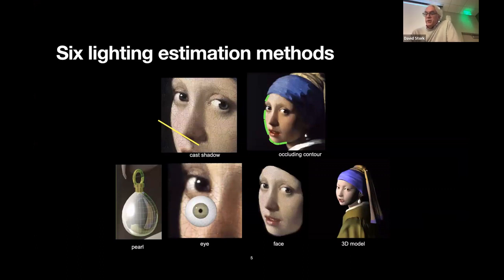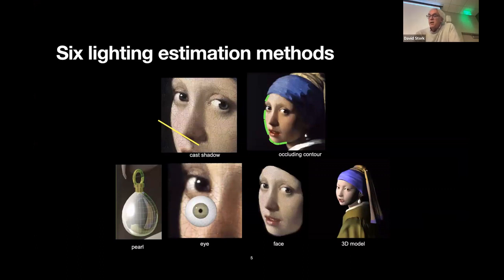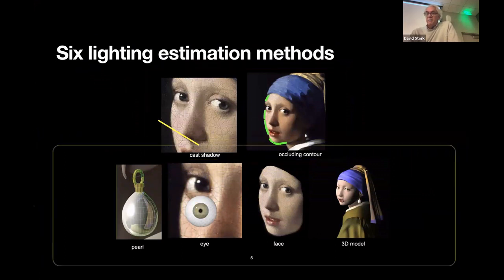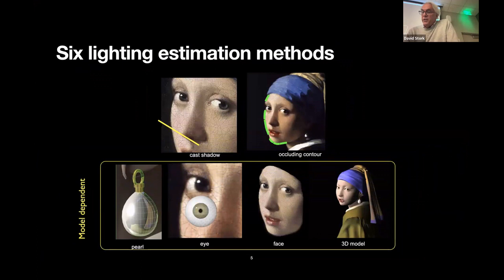The methods fall into two general categories. In model-independent methods, we don't need to know or make any assumptions about the three-dimensional form in the tableau. I'll perform a very simple cast shadow analysis and then apply an occluding contour algorithm. Then I'll turn to model-dependent methods, where we do need to know or make assumptions about the three-dimensional forms. I'll make a computer graphics model of the pearl, of her eye, of her face, and then the entire tableau.